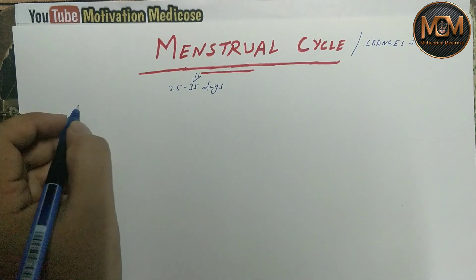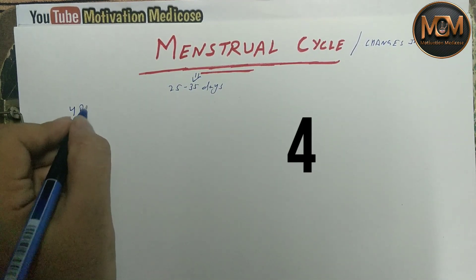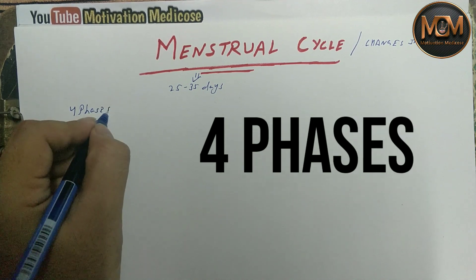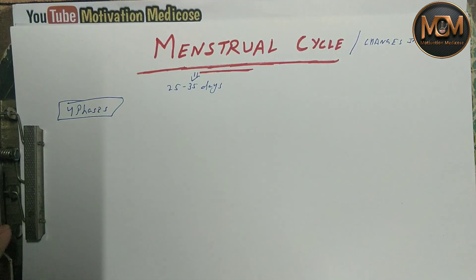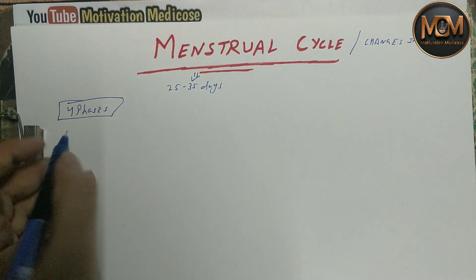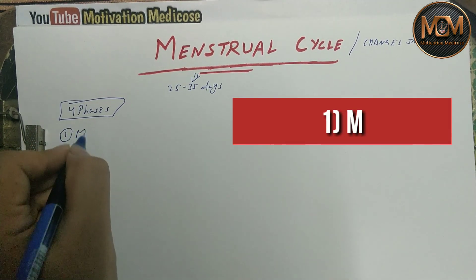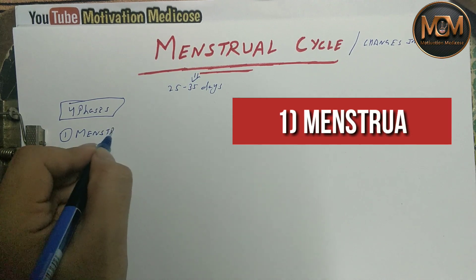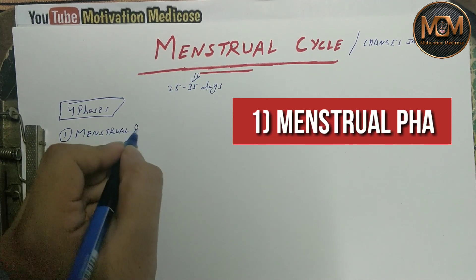The reproductive cycle consists of four phases. The first one is the menstrual phase, and we will cover all phases of the female sexual cycle — the ovarian cycle, the uterine cycle which we call the menstrual cycle — along with the hormonal changes that occur.